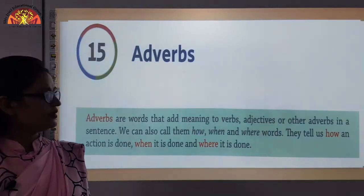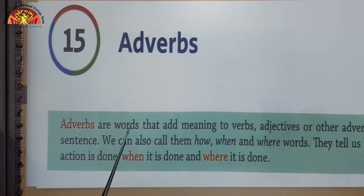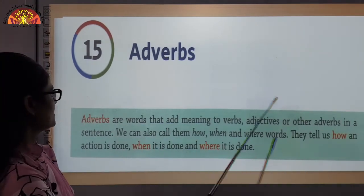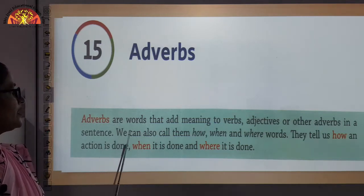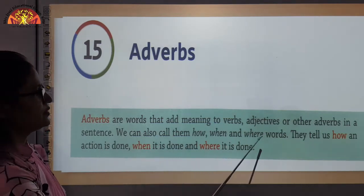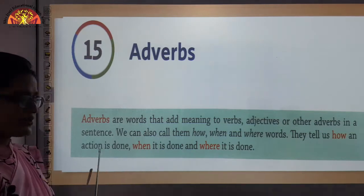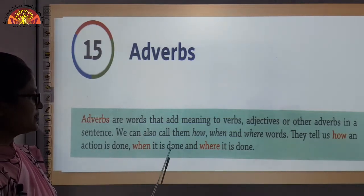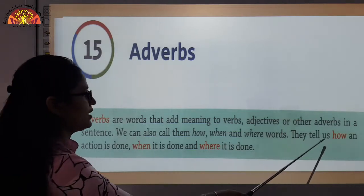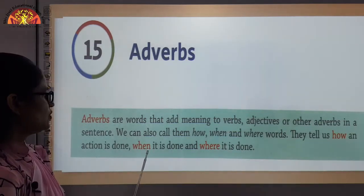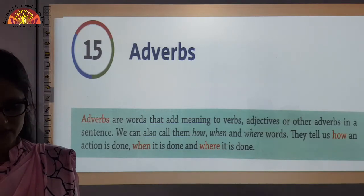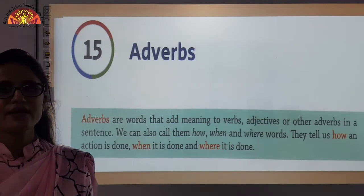Let's read what adverbs are. Adverbs are the words that add meaning to verbs, adjectives, or other adverbs in a sentence. We can also call them how, when, and where words. They tell us how an action is done, when an action is done, and where it is done — action kaha hua hai, kab hua hai, aur kaise hua hai. This is what adverbs actually tell us.